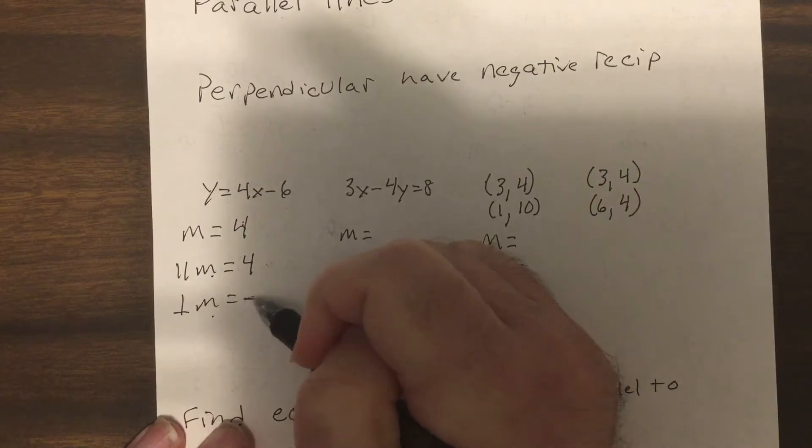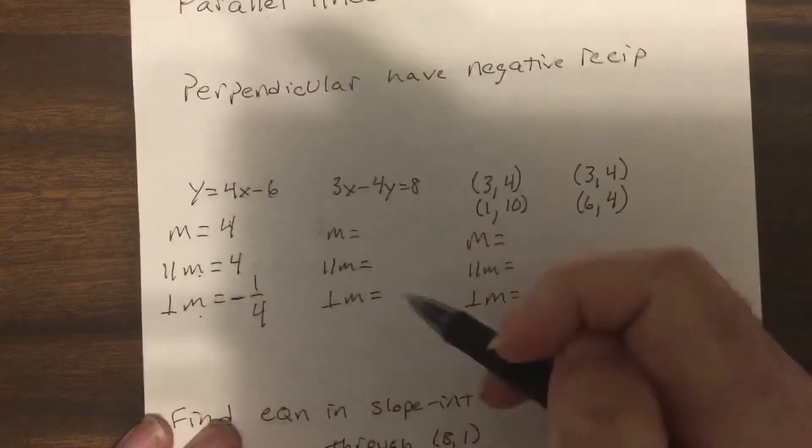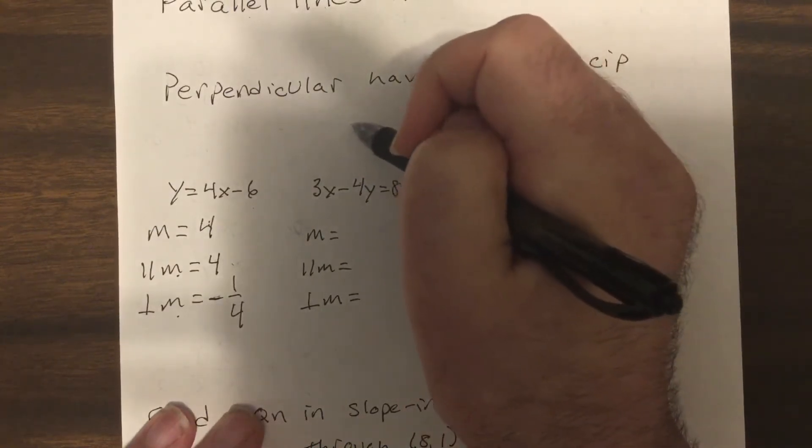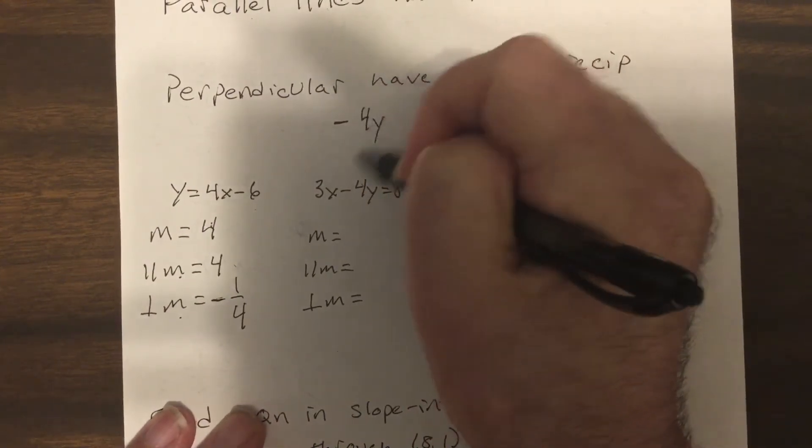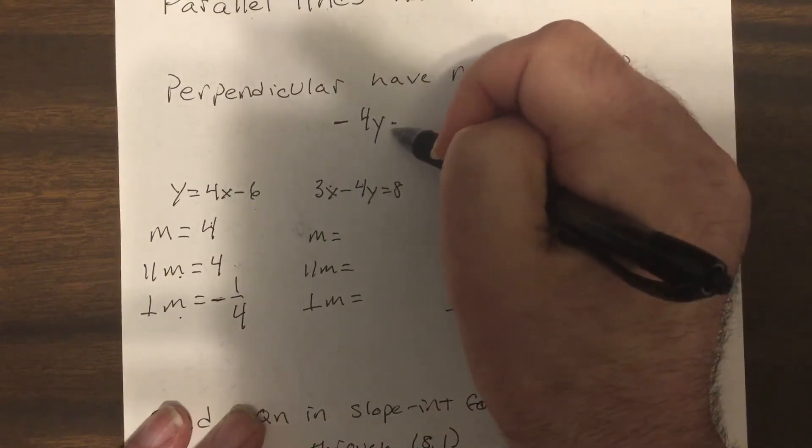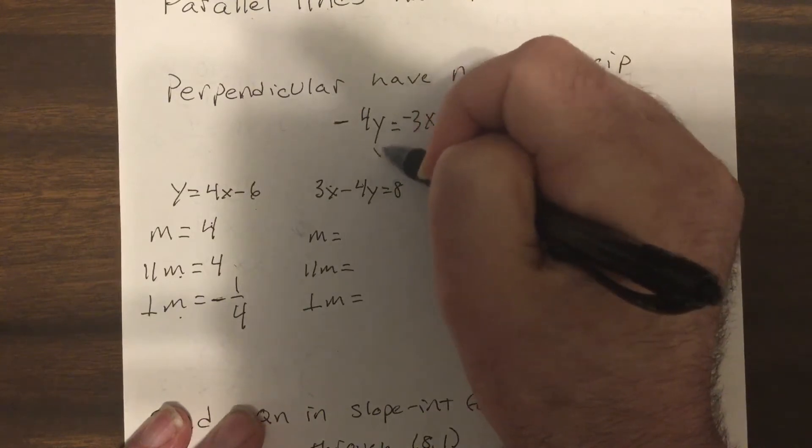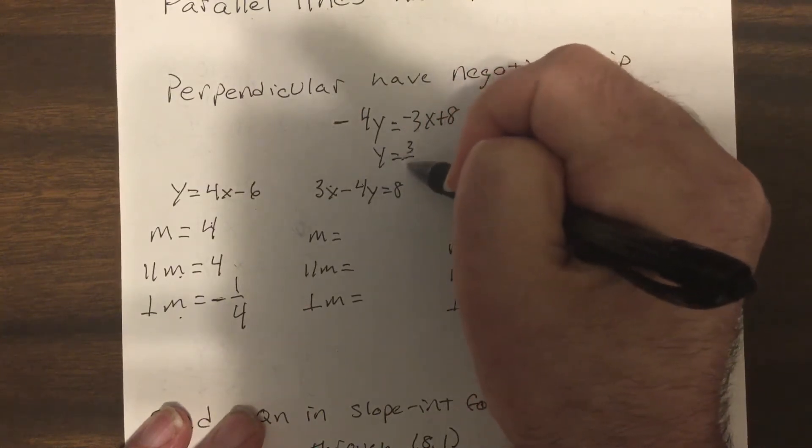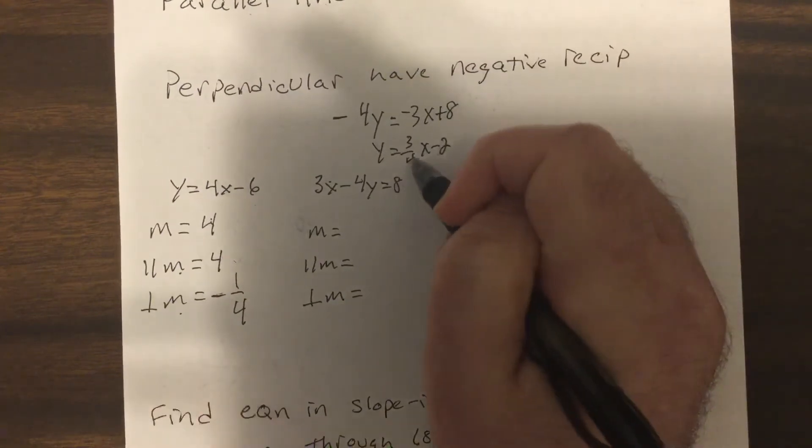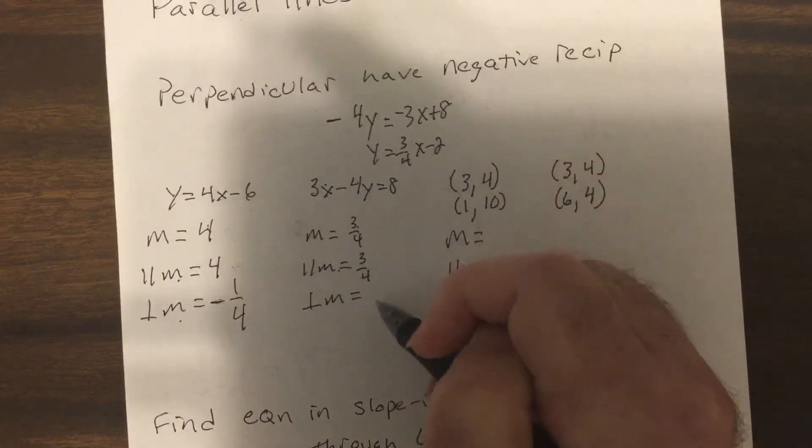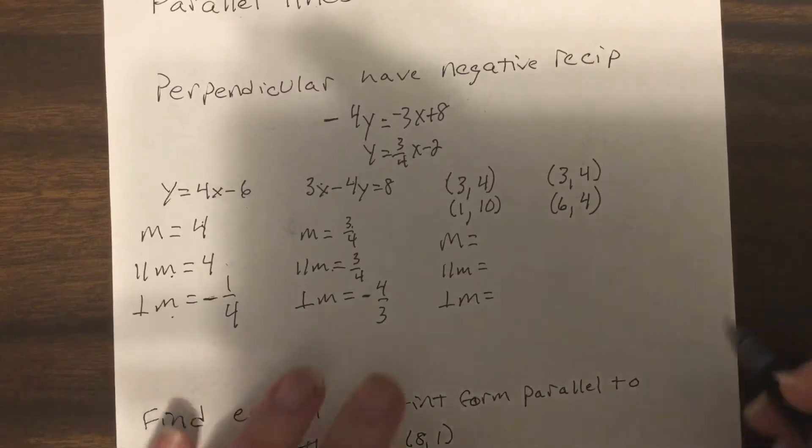The perpendicular slope is the negative reciprocal. To find slope you solve for y. So I would subtract 3x, divide by negative 4. So the slope would be three-fourths. Parallel always has the same slope, so perpendicular would be a negative reciprocal.